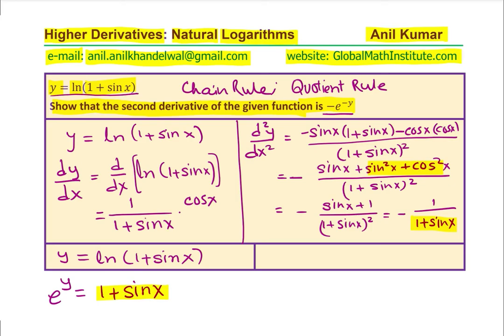And now, we can write our expression as d²y/dx² equals to minus 1 over e to the power of y. And that clearly is minus e to the power of minus y. You see that. So, that is how we can actually get the second derivative as required. Perfect.